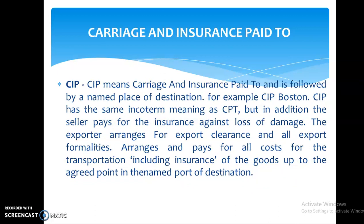The next one is CIP — Carriage and Insurance Paid To. CIP means the seller pays for the insurance against loss or damage, as well as the carriage expense. So the seller bears two costs: carriage expense and insurance. The seller also arranges and pays for all export clearance formalities and all transportation costs including insurance of the goods up to the agreed point at the port of destination.